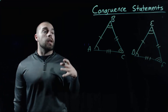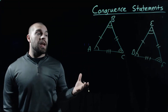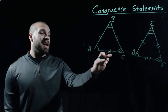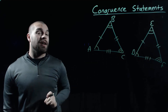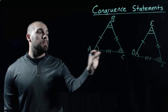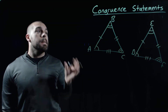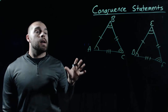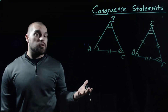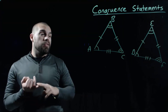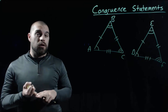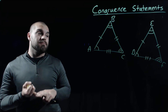In our triangles we've got a bunch of congruent angles: angle A and angle D, angle B and E, angle C and angle F are all congruent, and we've got a bunch of congruent sides. Based on this, we can say that our two figures are congruent — they've got all the same size angles and all the same size sides.